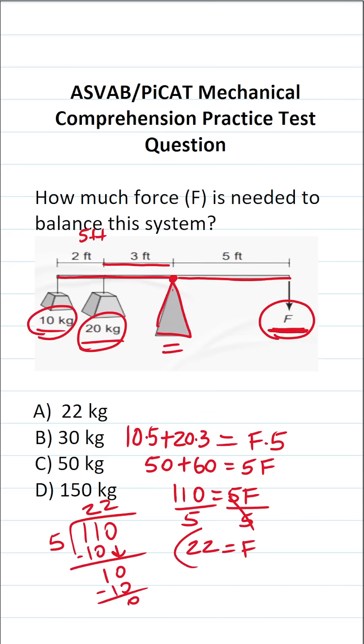So F in this case is 22. In other words, we have to apply 22 kg of force over here in order to balance this system. So this one is going to be A.